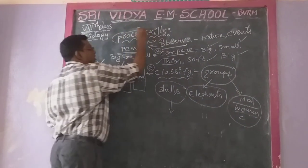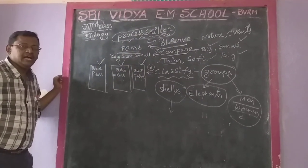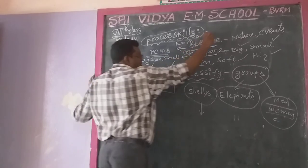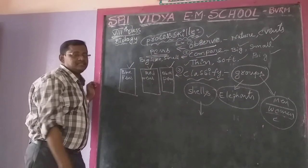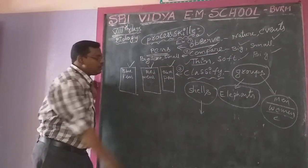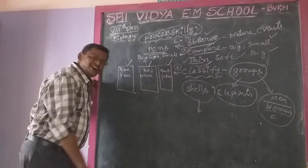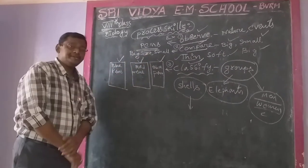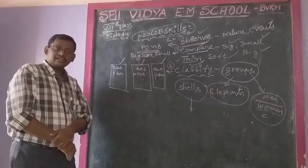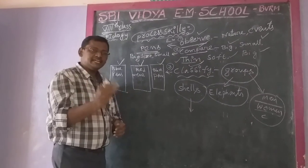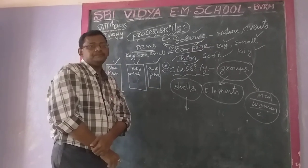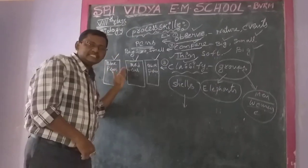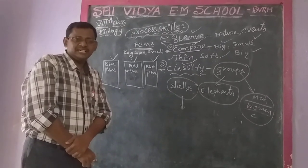All these things are discussed under process skills. Process skills explain how science gives good results, based on three points: the first is observation, the second is comparison, and the third is classification. I hope all of you children understand these points. Please watch this video once or twice carefully and then read your textbook. Some examples with boys and girls are there, which we will discuss in the next video. Thank you very much. Have a nice day.